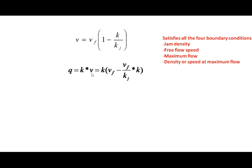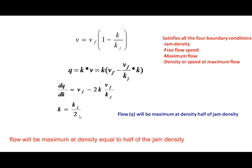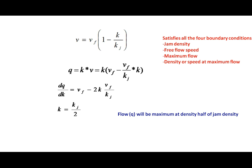Since Q = K × V, substituting V = V_F × (1 − K / K_J) gives a flow equation. For maximum flow, differentiate with respect to K and set it equal to zero; then K_opt = K_J / 2, meaning flow is maximum at density equal to half the jam density. Substituting K = K_J / 2 back into the speed equation gives speed equal to half of the free flow speed.